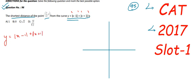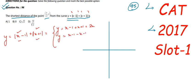Our first equation: when both terms are positive, y = (x - 1) + (x + 1) = 2x. Our second equation: when the first term is positive and the second is negative, y = (x - 1) - (x + 1) = -2.